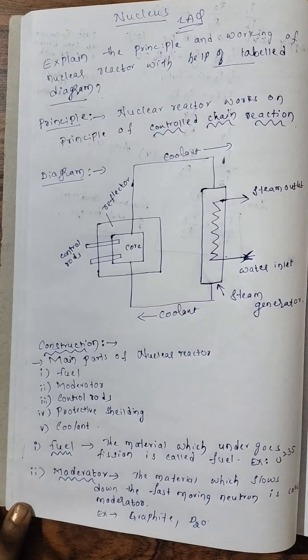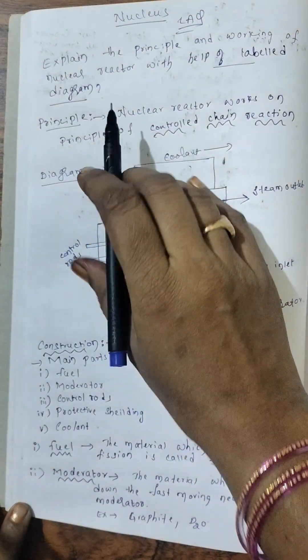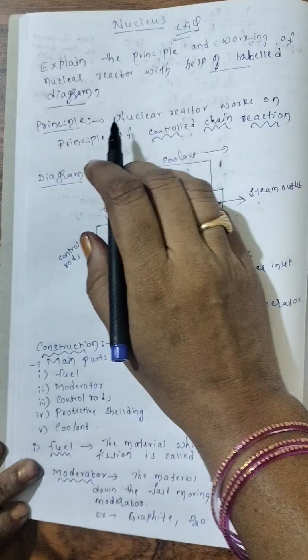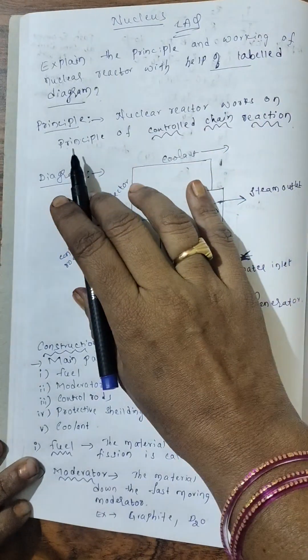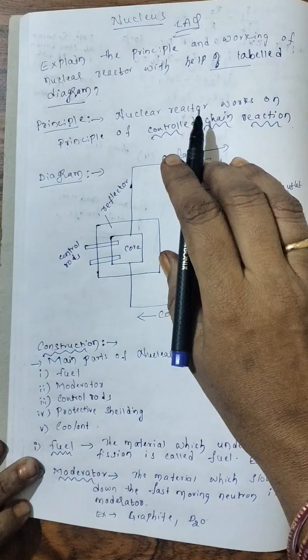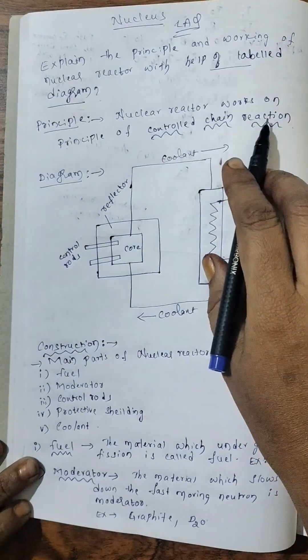So first, let us write the principle. Nuclear reactor works on principle of controlled chain reaction.